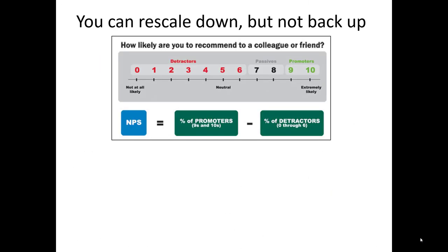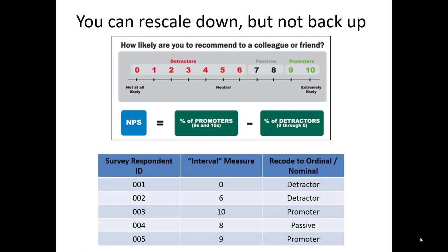An important principle: if you collect high quality data like ratio or interval, you can always rescale it down later if needed. But if you collect low level data like nominal or ordinal, you can't scale it back up after the fact. For example, the net promoter scale collects interval data with scores from 0 to 10. For purposes of the net promoter score, we recode it into nominal level data — detractors, promoters, and passives. We can go from interval to nominal, but we couldn't go the other way. If we started by categorizing someone as a detractor, we couldn't later determine which detractors were the biggest detractors versus mild detractors.